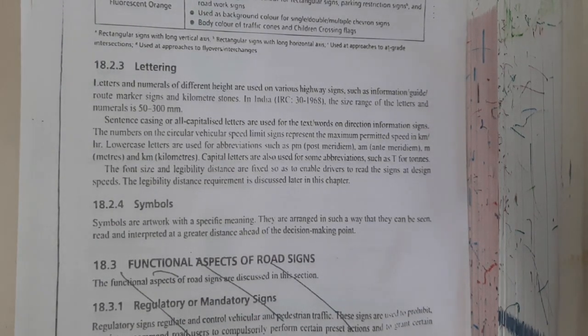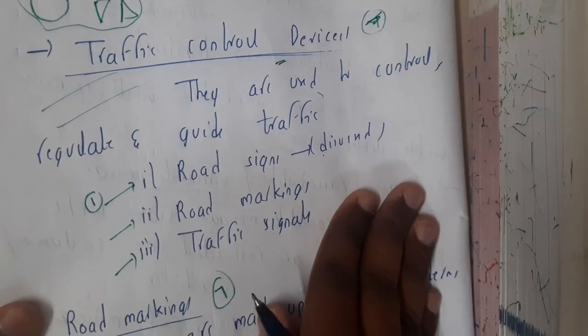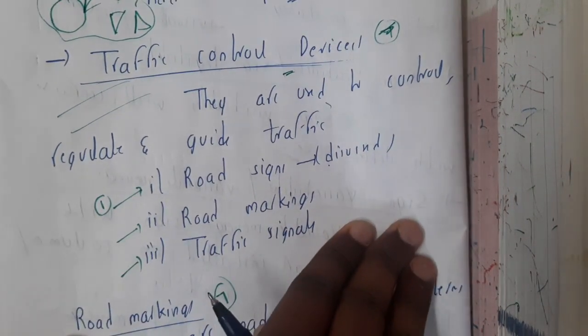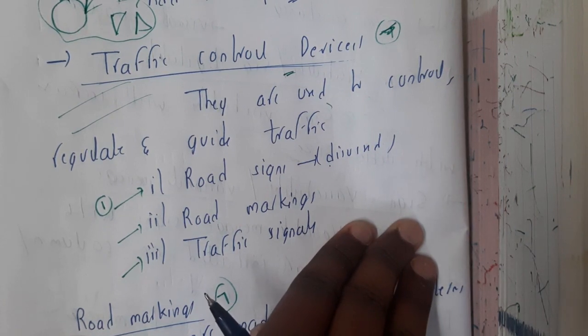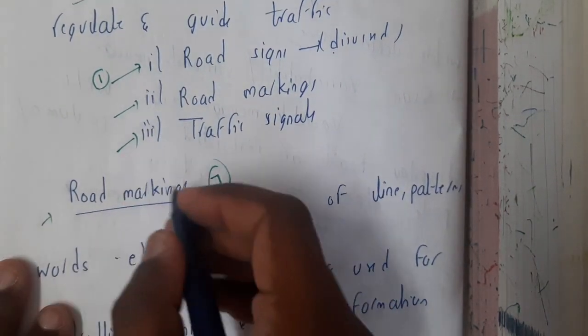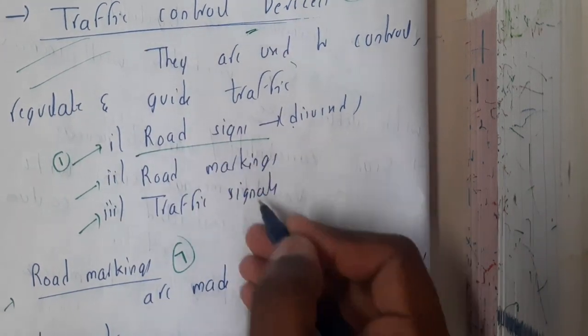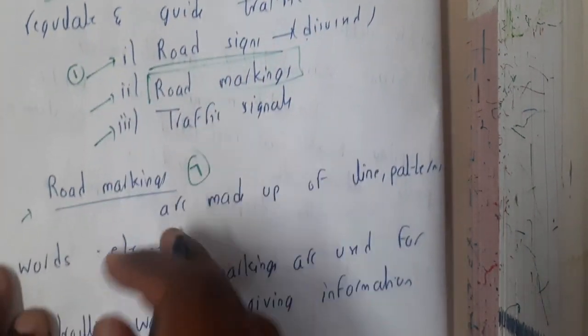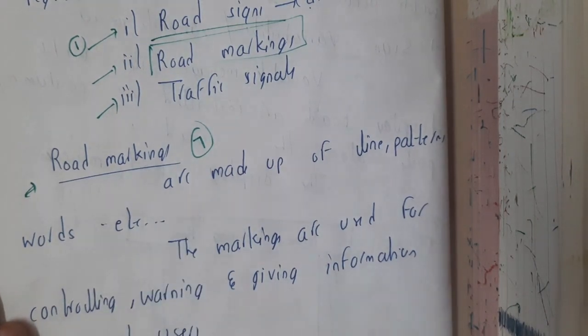I hope everyone got some basic idea about this color and shape concept. In the next lecture, we'll be discussing about traffic control devices - we'll be discussing about the road markings. Those are nothing but three types. Now we are done with the road signs, so now we will be moving on to the road markings. Let us meet in the next lecture. Thank you. Thanks for watching.